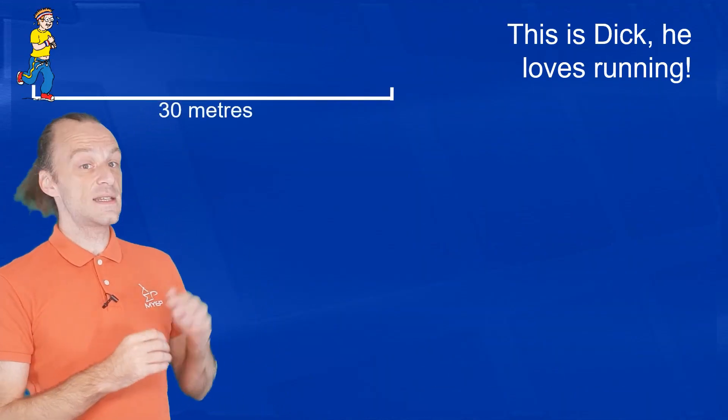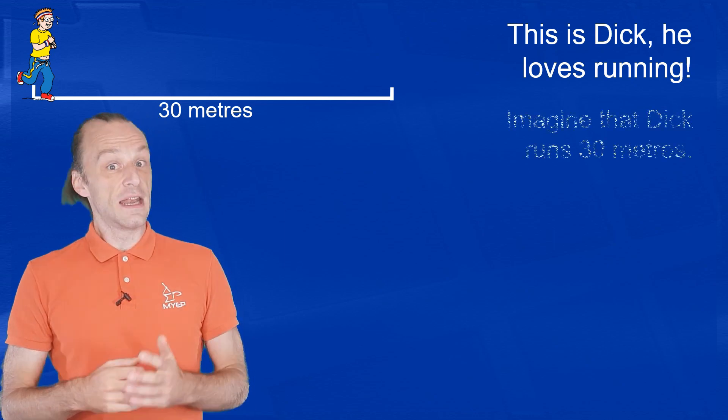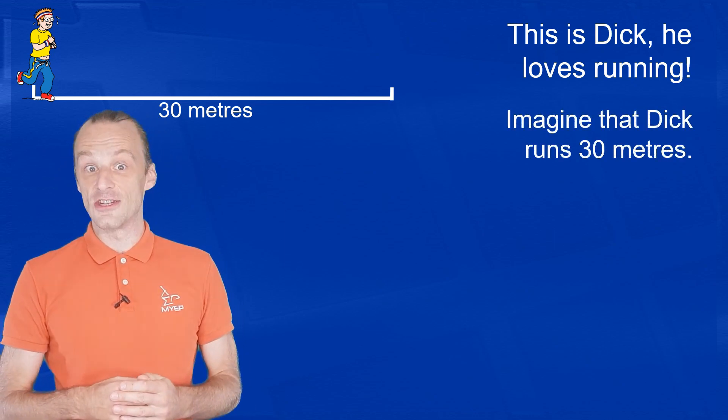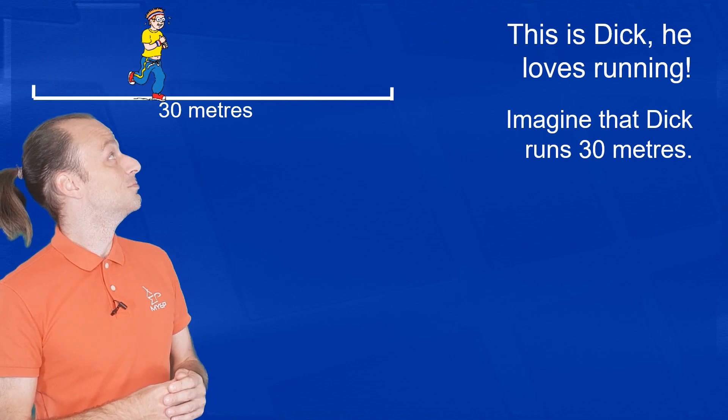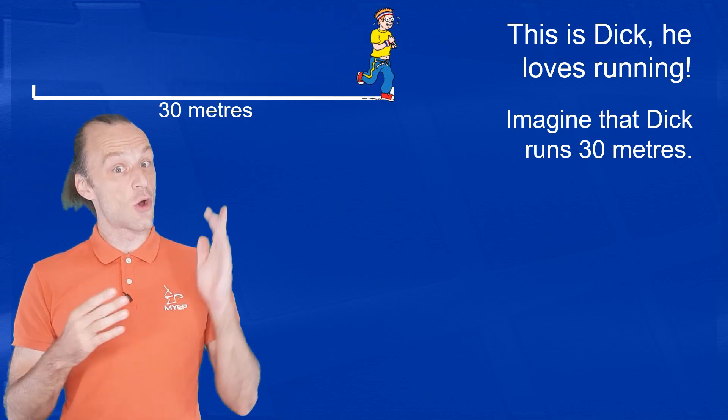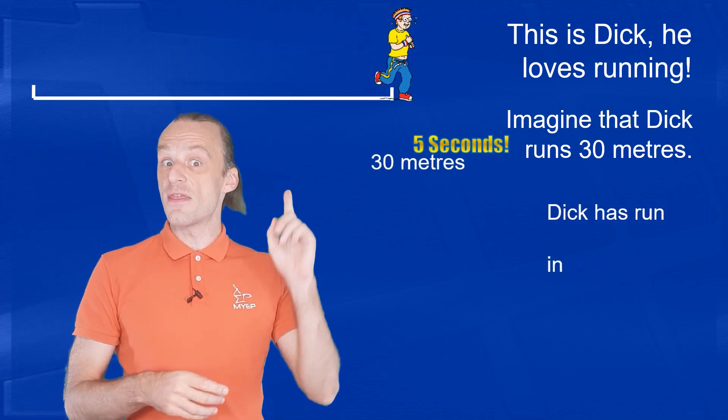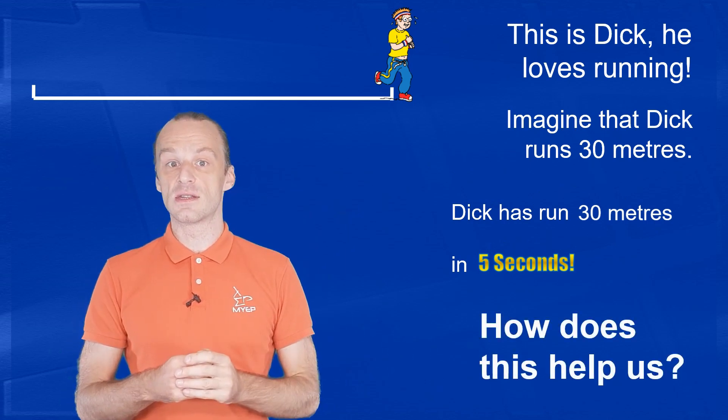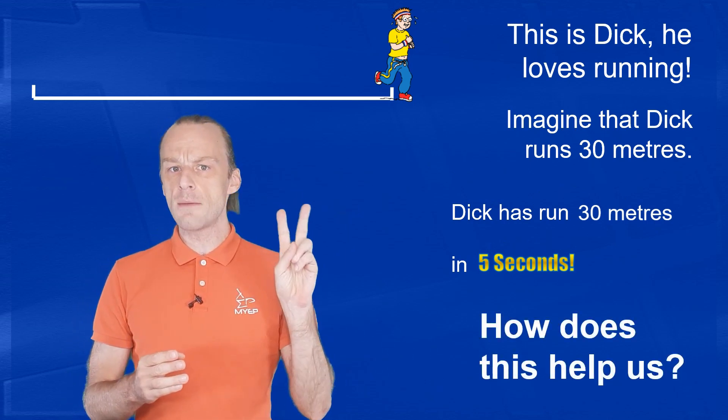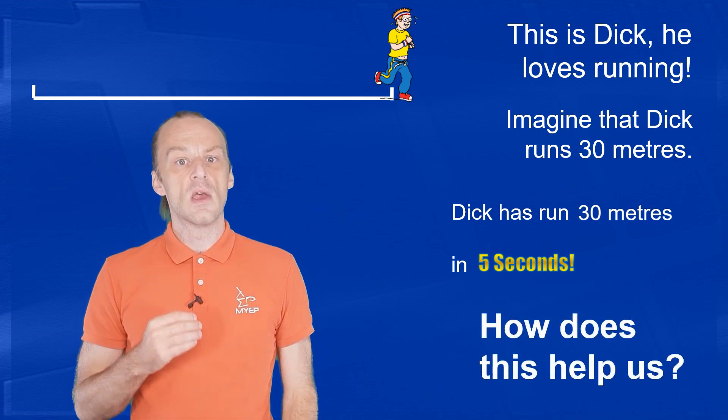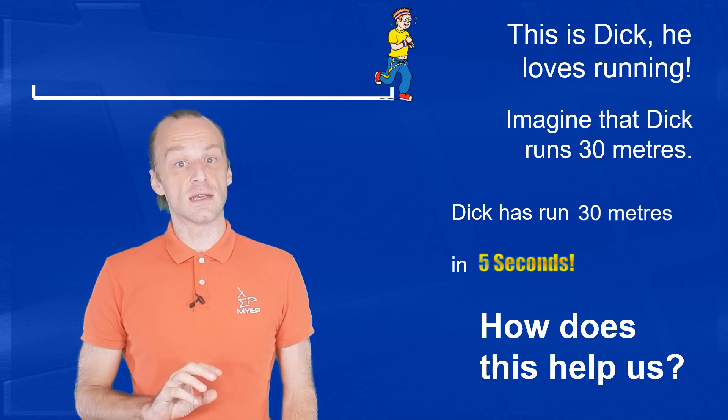Let's look at an example. This is Dick. Dick loves running. Let's see Dick run 30 meters. Okay, so that's not really 30 meters, but that is five seconds. So now we know two numbers about Dick's run. He ran 30 meters in five seconds.